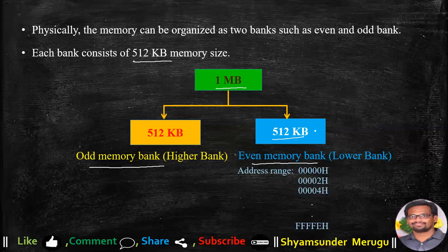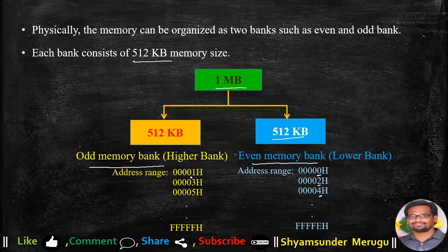We call the 512KB portion the even memory bank because if we look at the address locations of that 512KB, we will have the even-numbered addresses. So the even bank contains even-numbered locations, which is why it is called the even memory bank. In the case of the odd memory bank, the addresses used are odd-numbered locations. The even memory bank is also called the lower bank, and the odd memory bank is also called the higher bank.